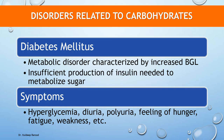Diabetes mellitus is a metabolic disorder characterized by increased blood glucose level, possibly due to insufficient production of insulin, which is needed to metabolize sugar. It is of two types: Type 1, or juvenile diabetes, where the pancreas is insufficient to produce insulin; and Type 2, which develops with age and is a metabolic disorder. Symptoms of diabetes mellitus include diuresis, polyuria, feeling of hunger, fatigue, and weakness.